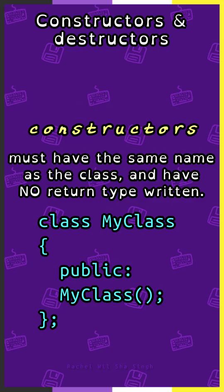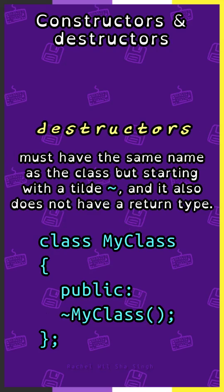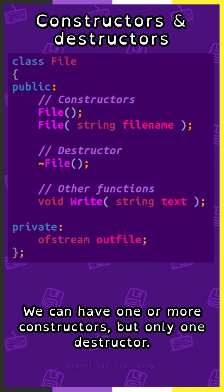Constructors must have the same name as the class and have no return type written. Destructors must also have the same name as the class, but starting with a tilde, and also do not have a return type. We could have one or more constructors, but only one destructor.